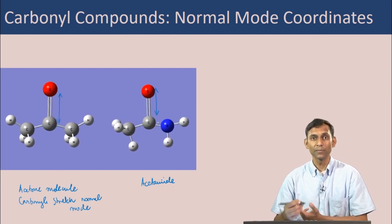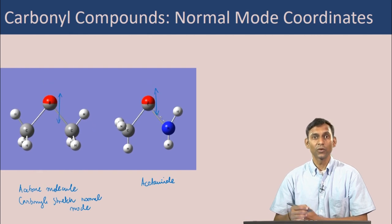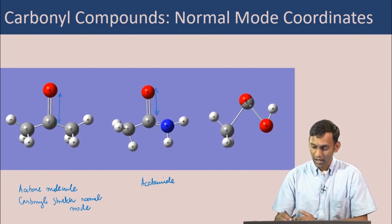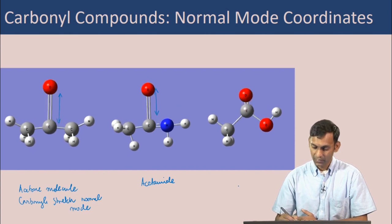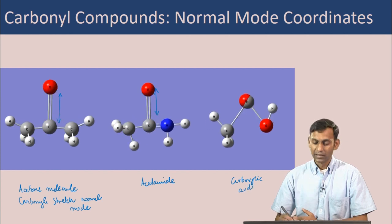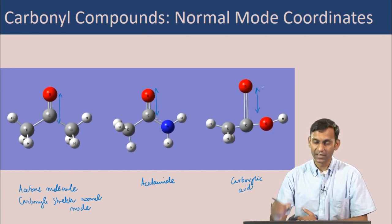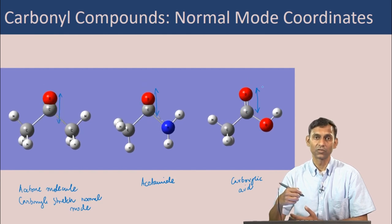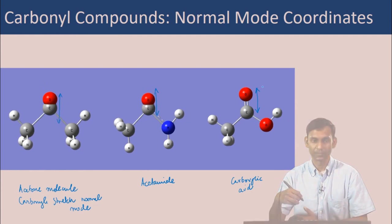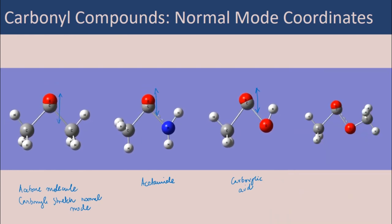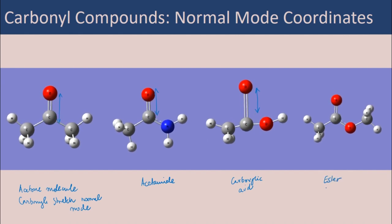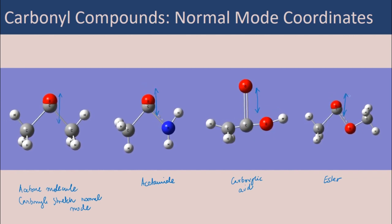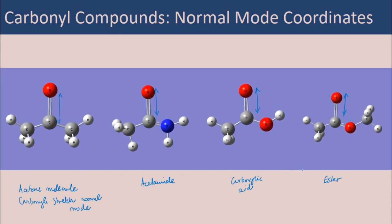Looking at a carboxylic acid — which has both a C=O carbonyl bond and a C−OH group — the carbonyl stretch is again the predominant motion in the corresponding normal mode, but other motions also contribute. Similarly, for an ester, the carbonyl stretch is the major motion that gives the mode its name, but additional atomic motions are present, differing from those in acetone, acetamide, or the carboxylic acid.